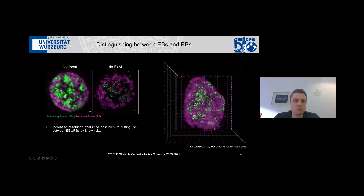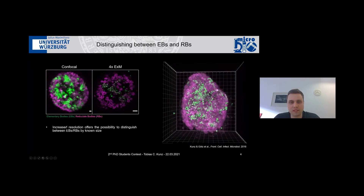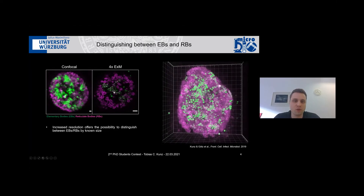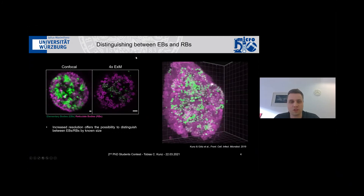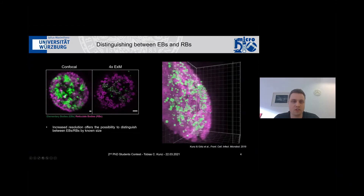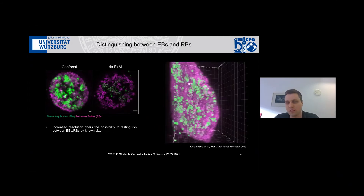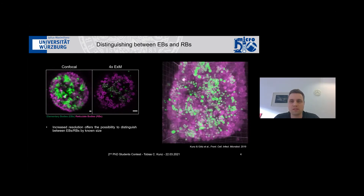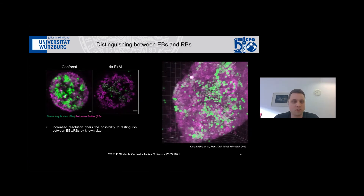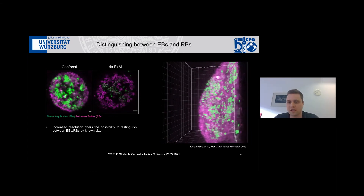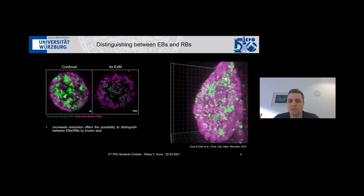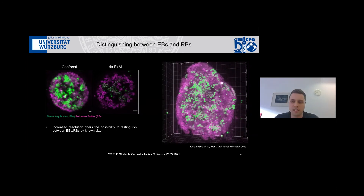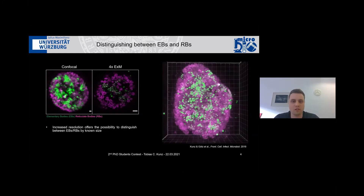On a normal confocal microscope, you can maybe get a rough idea of how much GFP versus mCherry you have, but you cannot really see individual particles. Expansion drastically changes this — you can really see the individual forms and distinguish them by size into EBs or RBs. Since this is done on a conventional confocal microscope, it's also easy to do z-stacks and therefore look in three-dimensional space at an inclusion, allowing you to really determine the stage of infection of a Chlamydia inclusion.